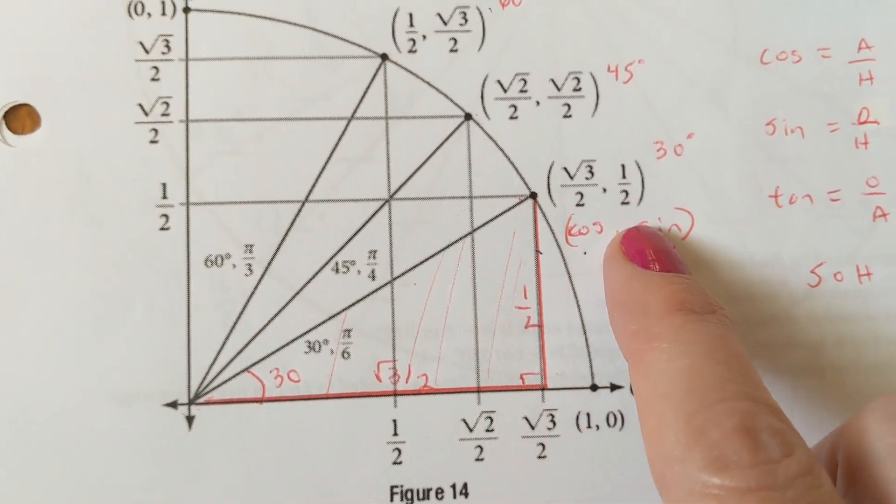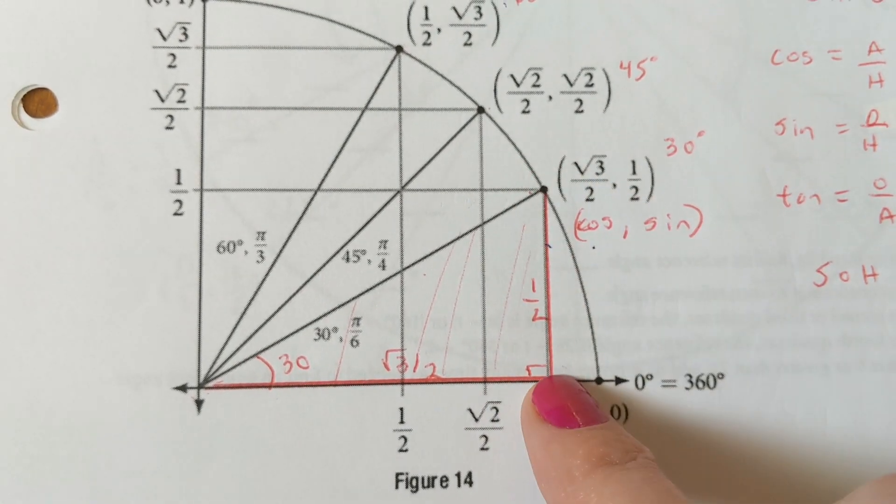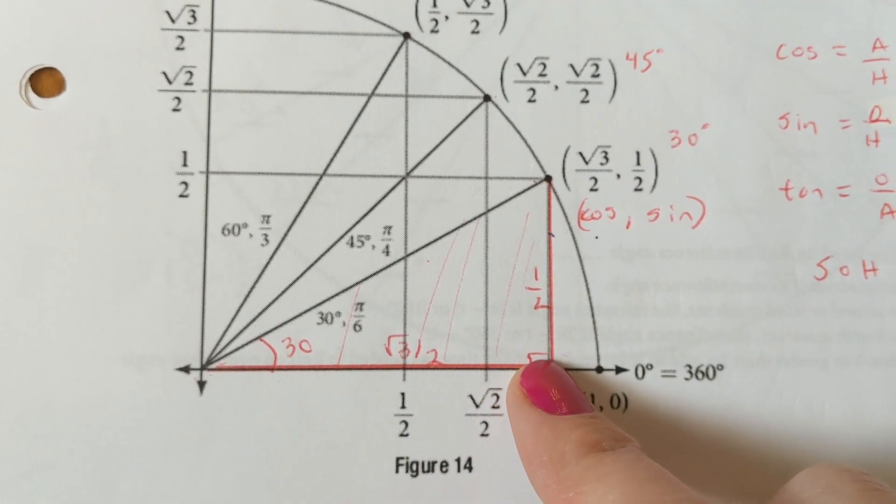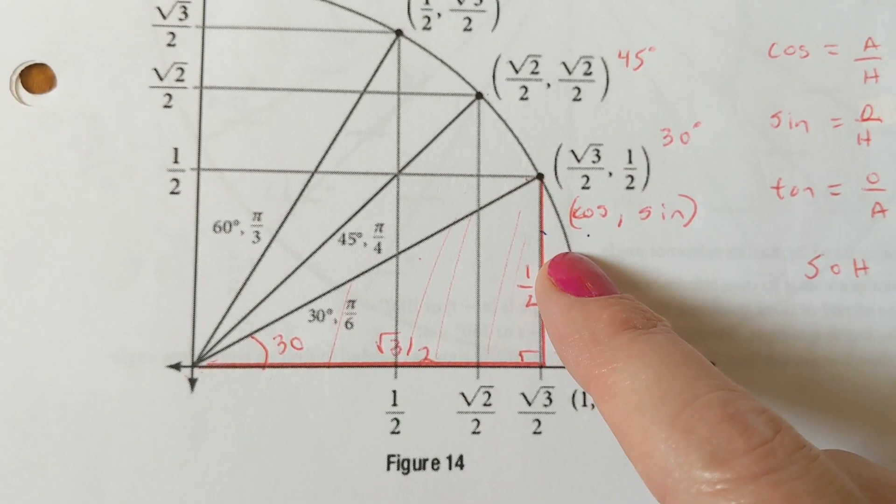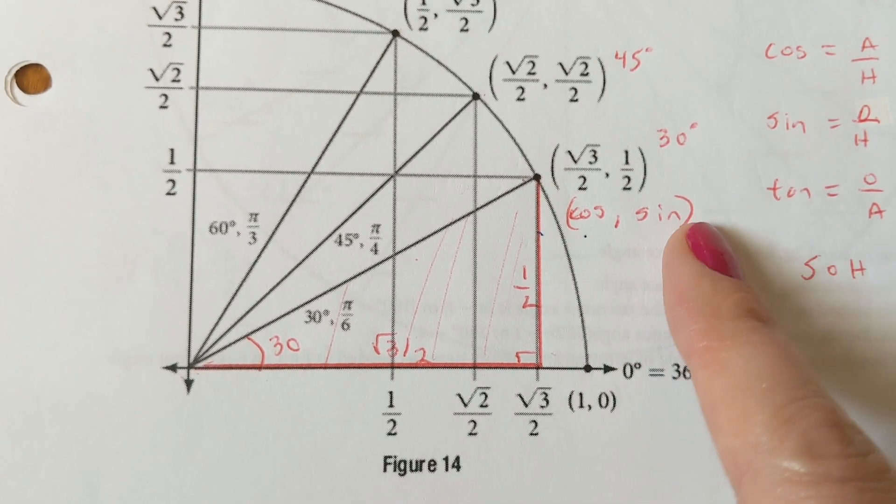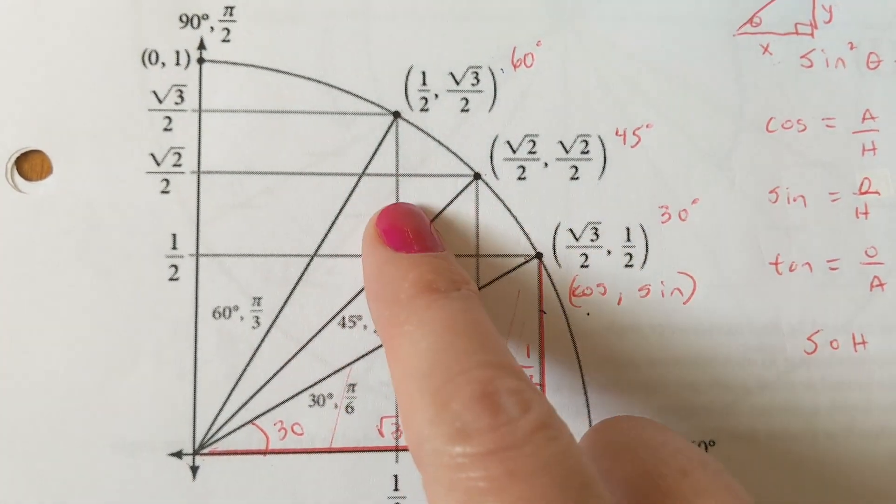That's what gives us these numbers right here. This is the x, radical 3 over 2. This is the y, 1 half. You went over radical 3 over 2, and up 1 half. So that's the x and the y. Cosine's x, sine is y. And that flips then because of where the 30 and the 60 is at.